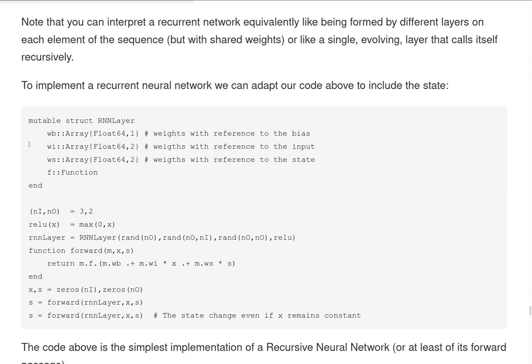So we can try to implement a basic RNN layer, at least the forward passage of it. So we will adapt the code that we wrote earlier. We create our structure RNN layer, and here instead of having only the weights with respect to the bias and the weights with respect to the previous layer, so in this case to the state, we have also another matrix of weights with respect to the input.